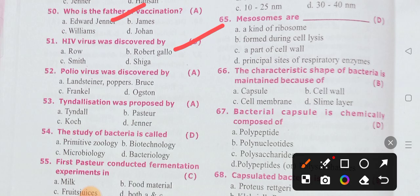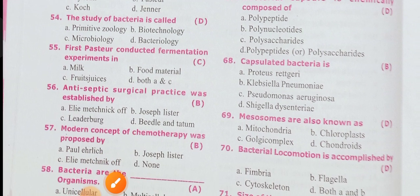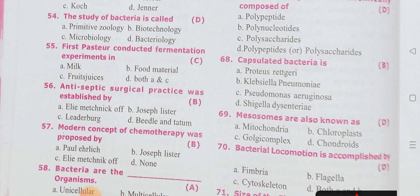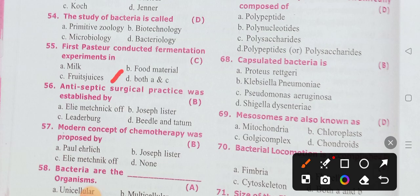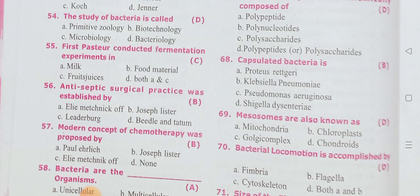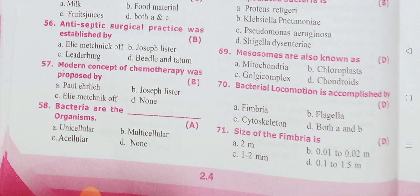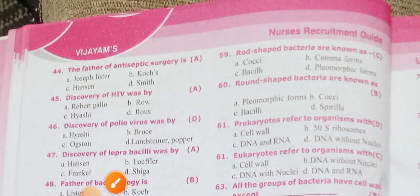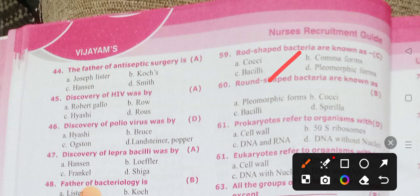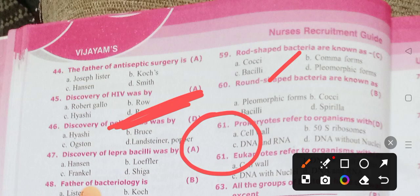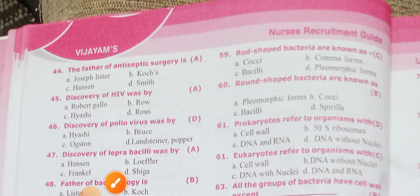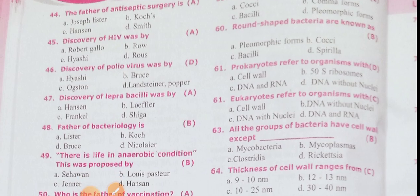Tyndallization was proposed by Tyndall. The study of bacteria is called bacteriology. Fermentation experiments were first conducted in fruit juices. Antiseptic surgical practice was established by Joseph Lister. The modern concept of chemotherapy was proposed by Joseph Lister. Bacteria are unicellular. Rod-shaped bacteria are called bacilli.